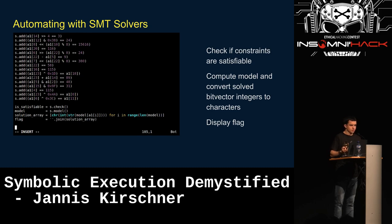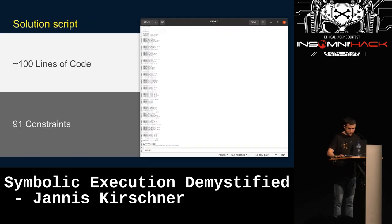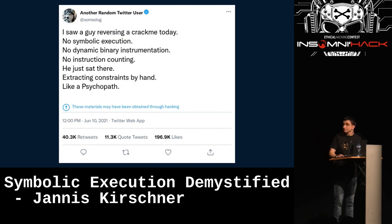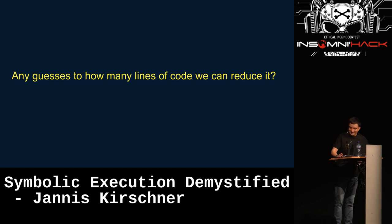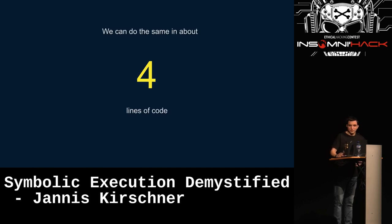I'm not that excited about that solution because extracting all those constraints takes forever, especially in a CTF where time is everything. About 100 lines of code, 91 constraints. So if we apply symbolic execution, how many lines do we need? I say we can do about four if we like clean code.